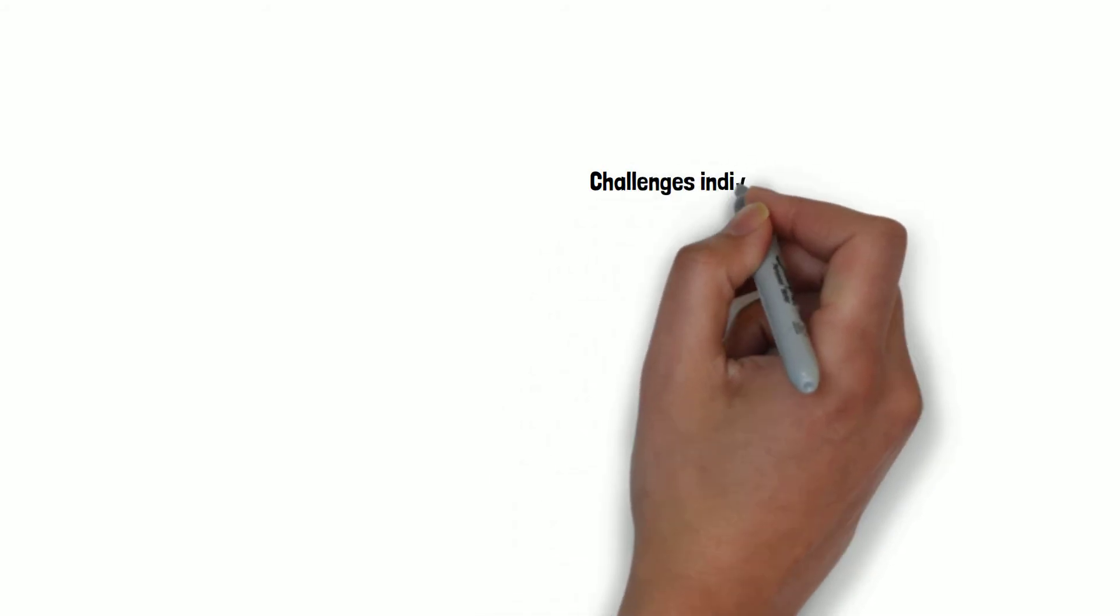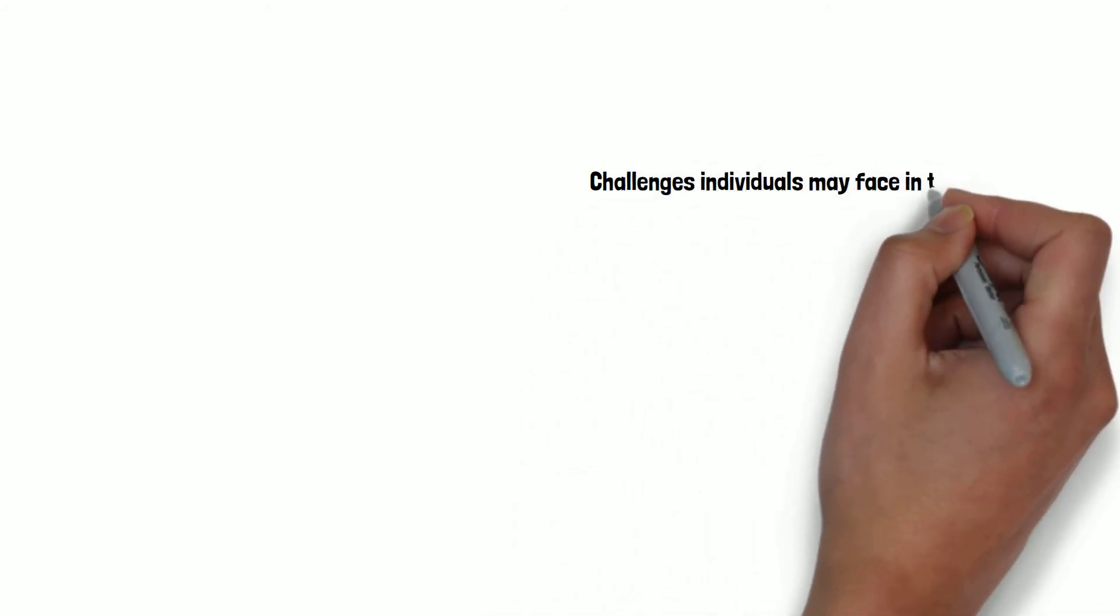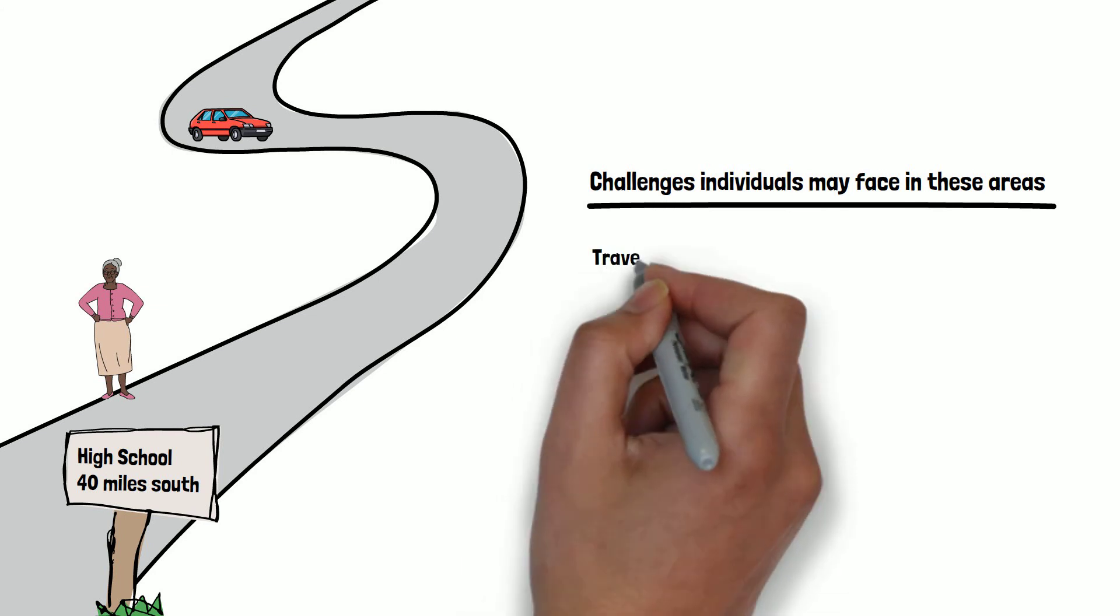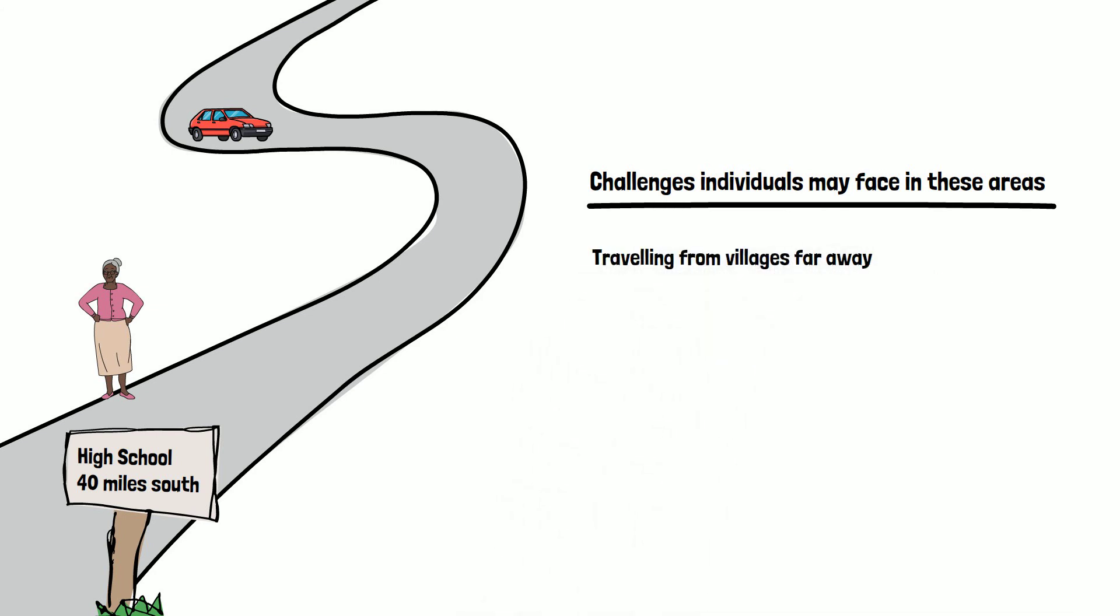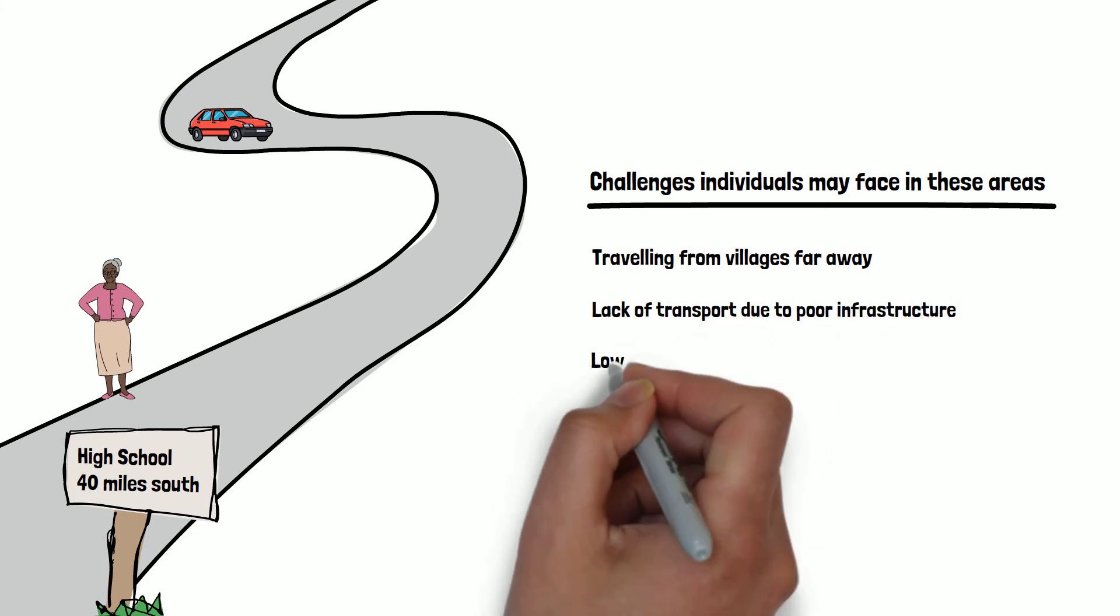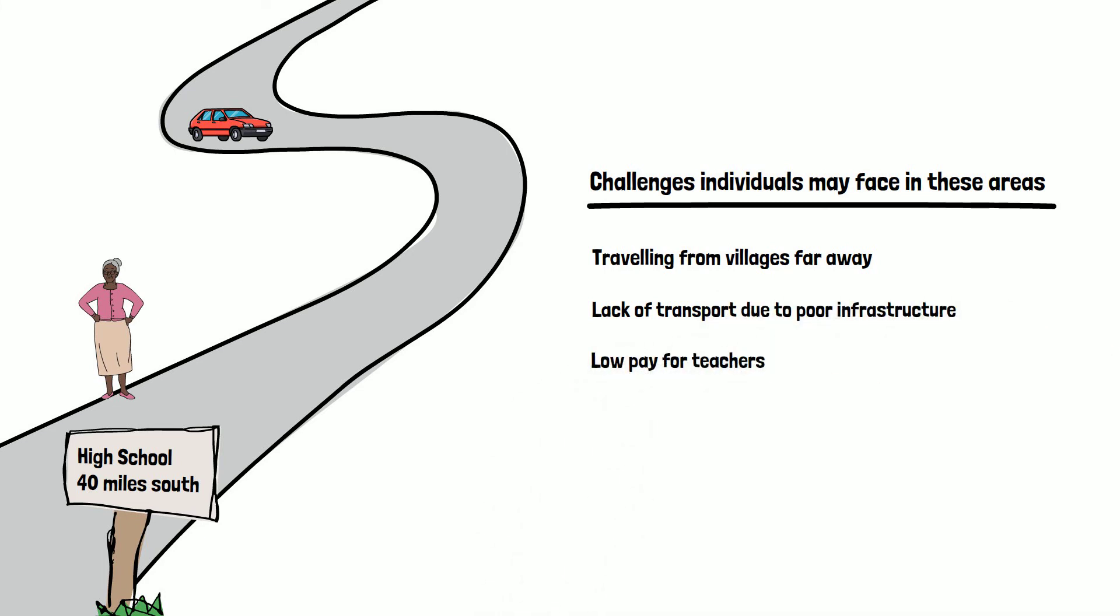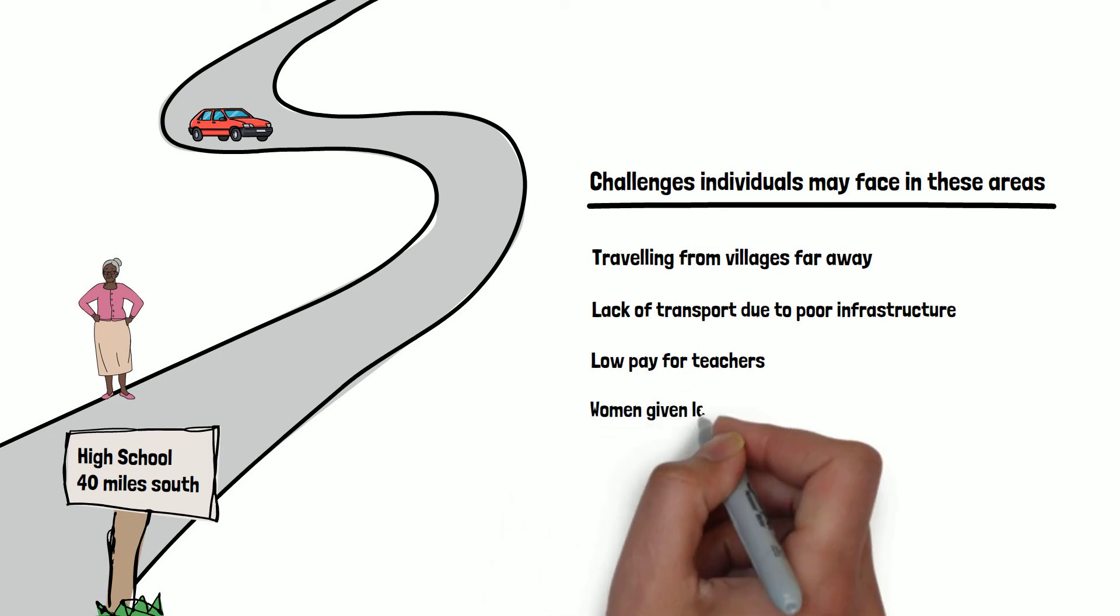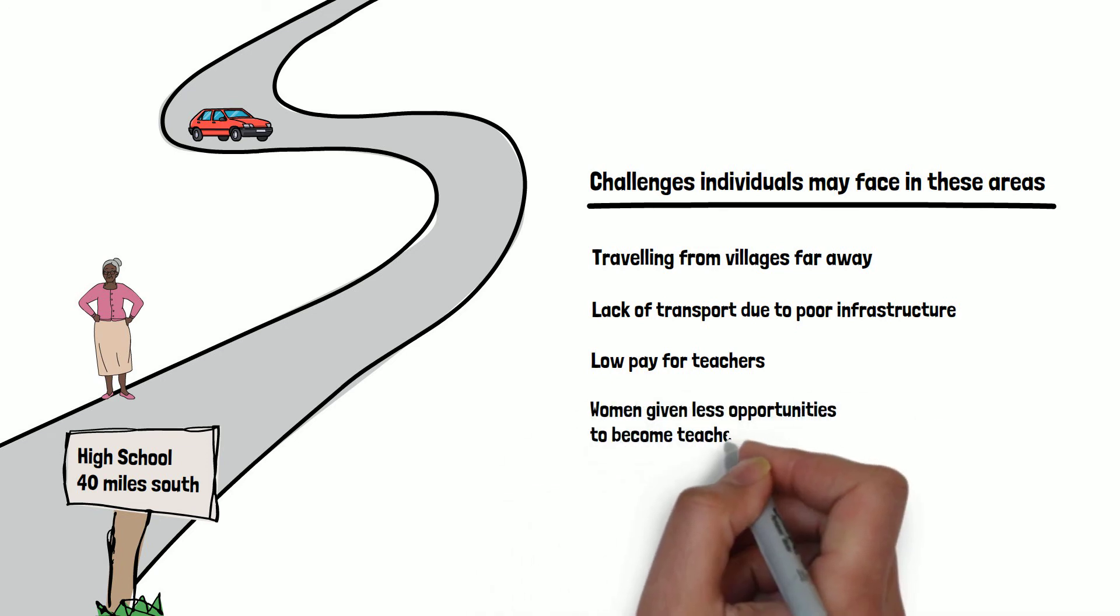However, it is important to consider the real and practical challenges individuals may face in these areas, discouraging them from training to become a teacher. For example, are they travelling from villages far away where there is a lack of transport due to poor infrastructure? Is the pay for teachers too low? Are women given less opportunities to become teachers due to inequality?